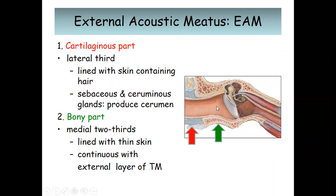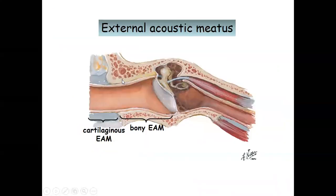The external acoustic meatus is a canal. It has a cartilaginous part, which is the lateral one-third, lined by skin containing hair. The skin lining the cartilaginous part has sebaceous and ceruminous glands, which produce cerumen. The bony part is the medial two-thirds, also lined with skin that is continuous with the skin lining the external layer of the tympanic membrane.